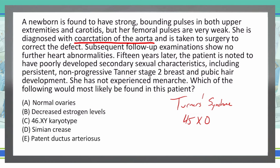Let's go through these answer choices together. Choice A: Normal ovaries. With Turner syndrome, the ovaries are not normal — they're actually rudimentary ovaries — so that's not a possible answer choice.